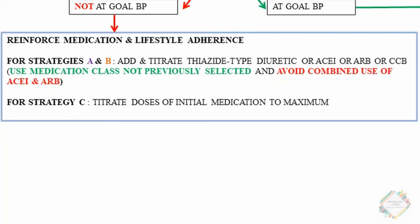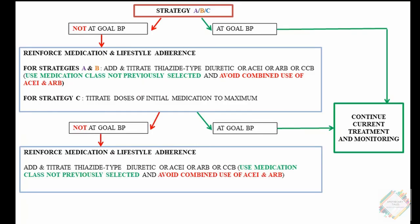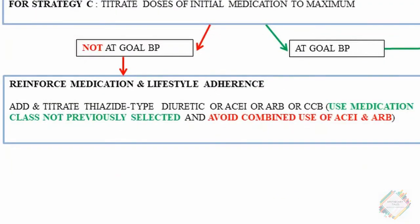For strategy C, we titrate the doses of initial medications to maximum. After this stage, if the goal BP has been attained, we continue current treatment and monitor. If not attained, we reinforce medication and lifestyle adherence, then add and titrate a thiazide-type diuretic, ACE inhibitor, ARB, or CCB — again using a medication class not previously selected and avoiding the combined use of ACE inhibitors and ARBs.